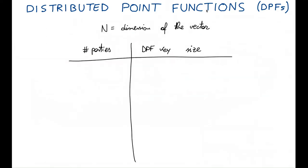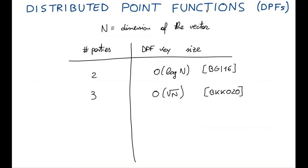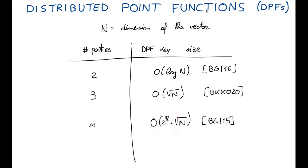Regarding the state of the art of distributed point functions: in the two-party setting, they are very efficient — we know constructions with logarithmic key size in the length of the unit vector. However, in the three-party setting, constructions are not as efficient; the best solutions have O(sqrt(n)) key size. Finally, in the n-party setting, the key size is still O(sqrt(n)), but there is also a factor that is exponential in the number of parties.